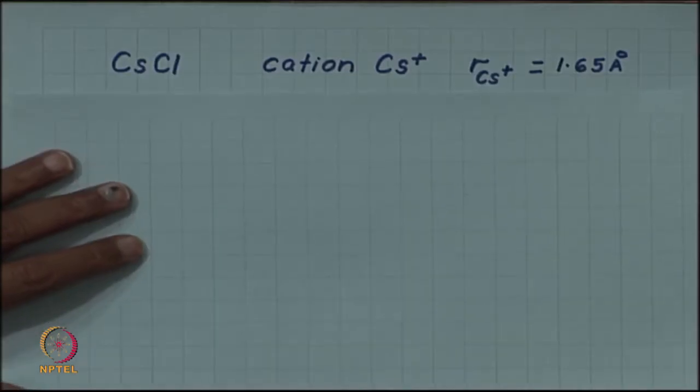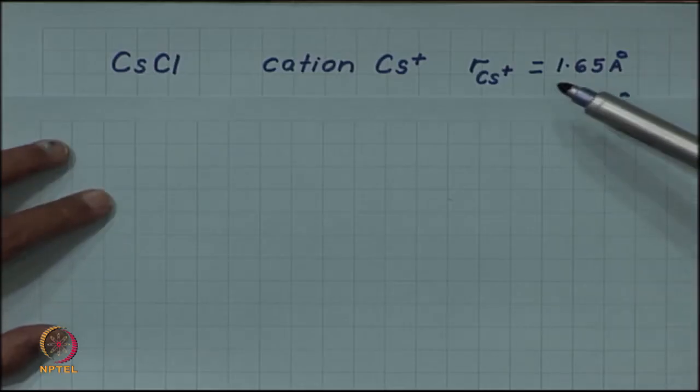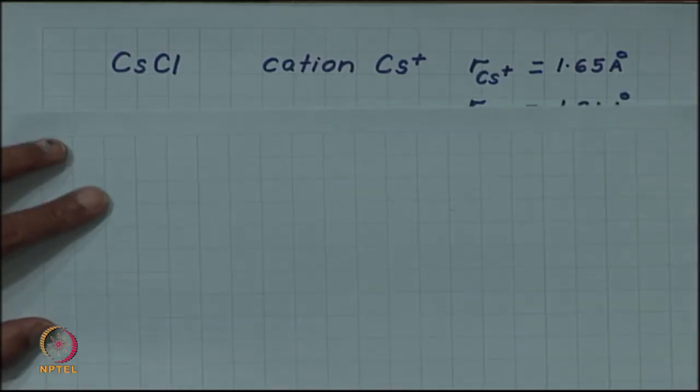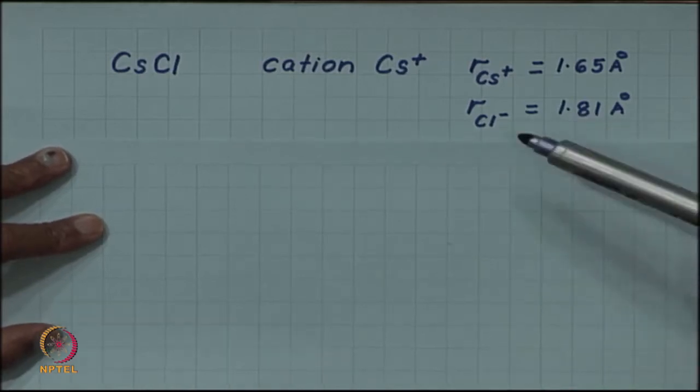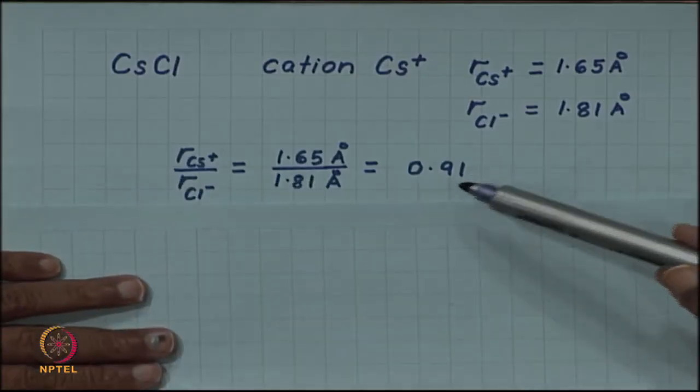Let us look at caesium chloride. The cation is caesium plus with a radius of 1.65 angstrom, and the anion is chloride with 1.81 angstrom. The radius ratio works out to be 0.91.